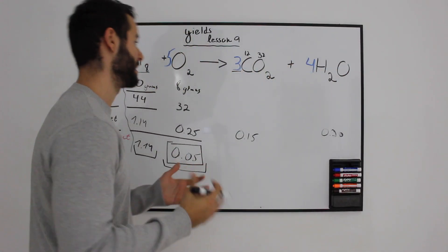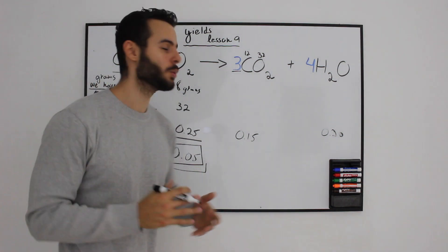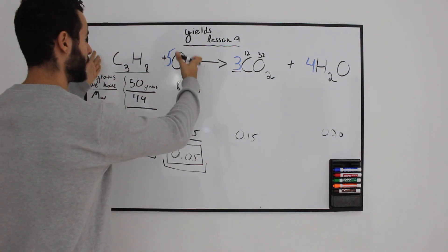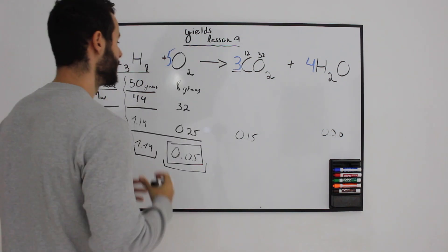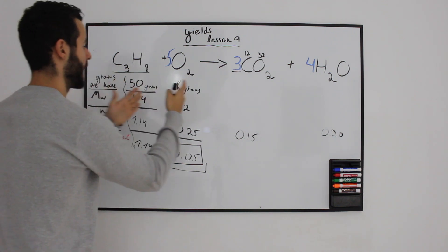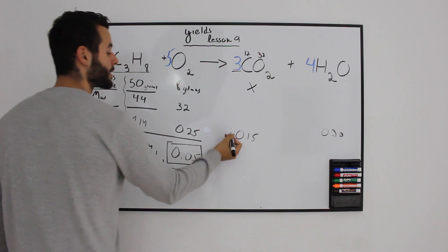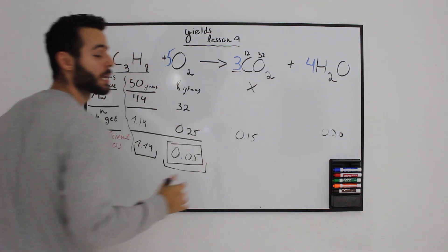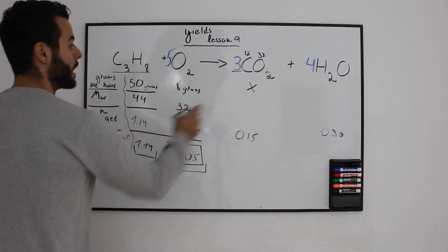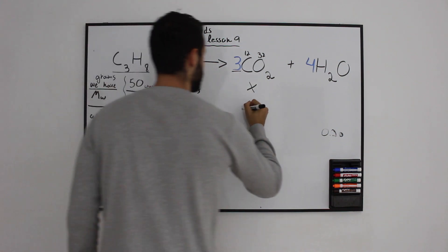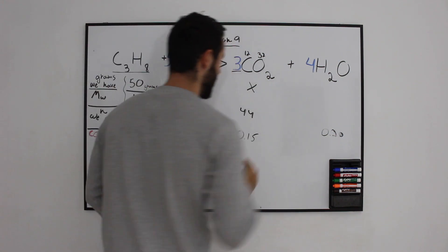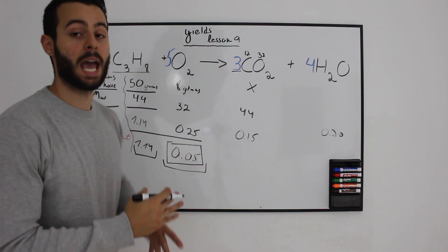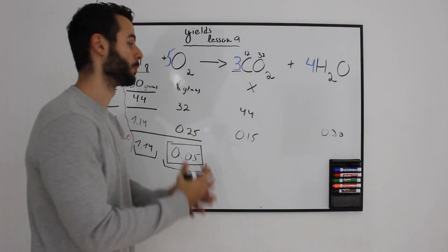But wait — they are asking how many grams of carbon dioxide you would get, given 50 grams of propane and 8 grams of oxygen. So now you have to climb up the table to reach the number of grams for carbon dioxide. We have 0.15 moles of CO₂, the molecular weight is 44, and multiplying those two numbers gives you the number of grams of carbon dioxide produced.